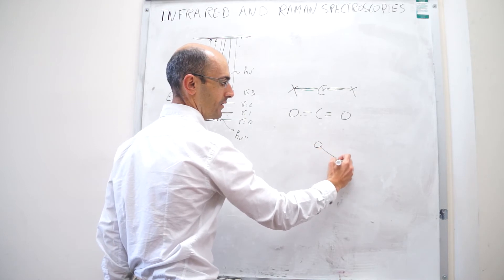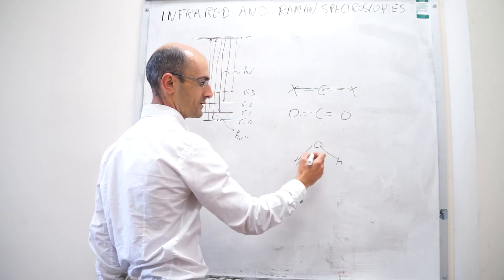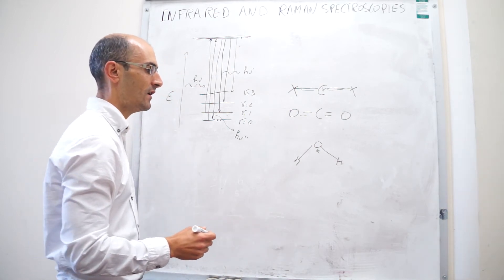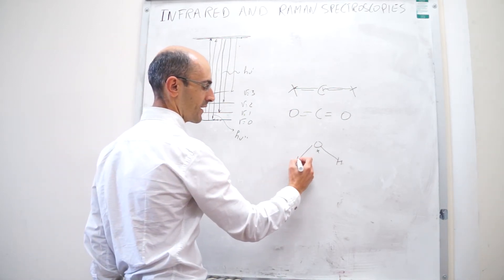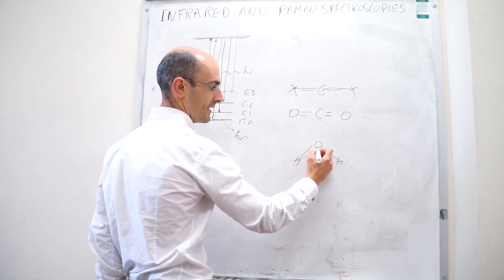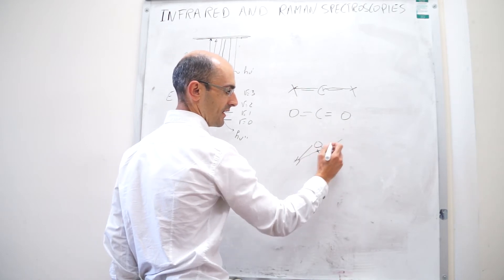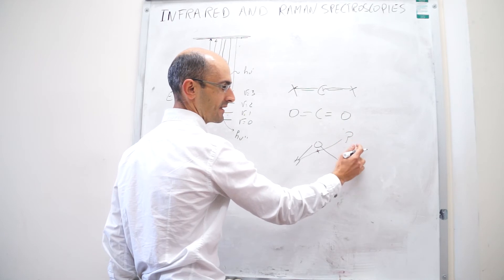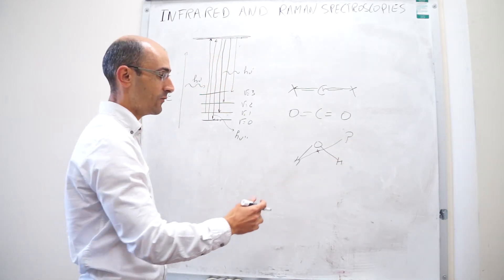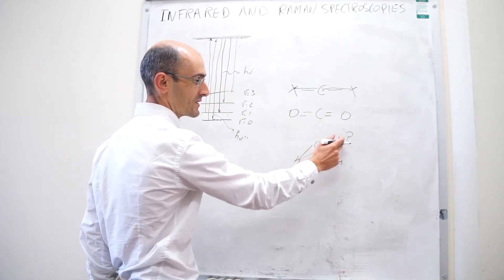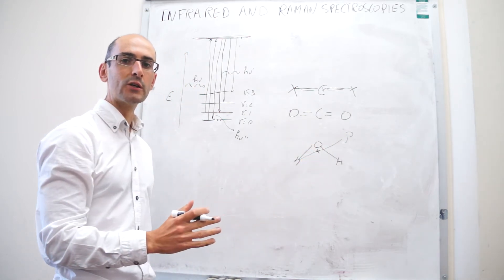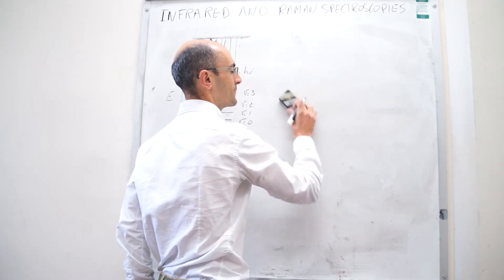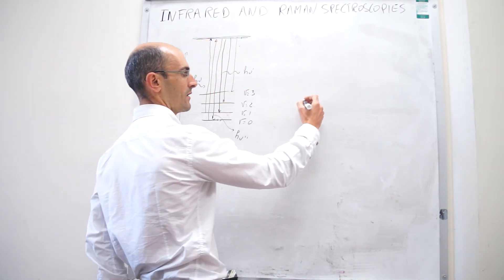What about water? Water is bent, so the center of the molecule is somewhere in the middle. You connect every single atom with the center and see if on the other side you find exactly the same atom. Clearly in water, you don't have a hydrogen atom right at the other side of the center, so this molecule does not have a center of inversion.